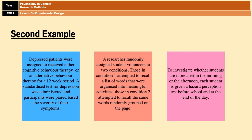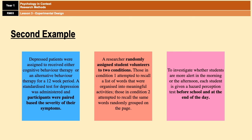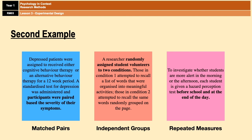Hopefully you've had a look at that. The key phrases to pick out are: in the first study, participants were paired based on the severity of their symptoms — matched pairs. In the second study, researchers randomly assigned student volunteers to two conditions — independent groups, because there's no mention of conditions being switched. And in the last one, participants were tested before school and at the end of the day — repeated measures, because all participants experienced all levels of the IV.